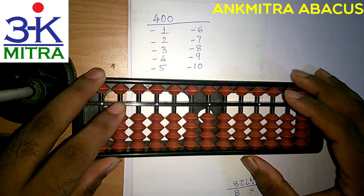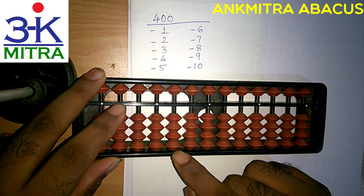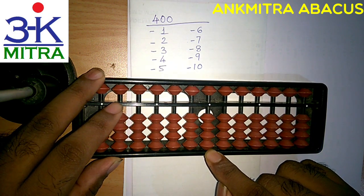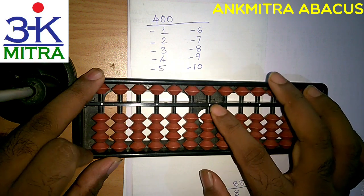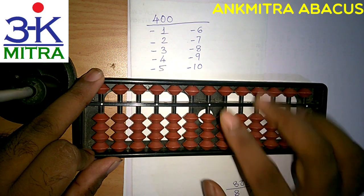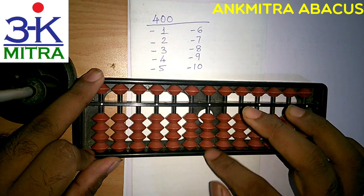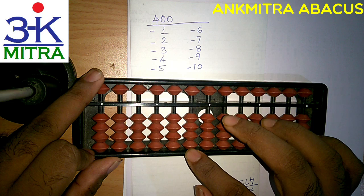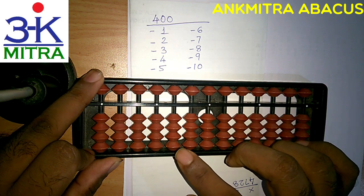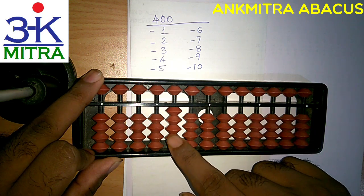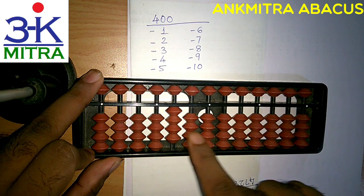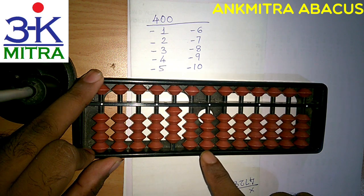So let's start with 400 on the Abacus first. This is our units place — the white dot in the middle is our units place. So this rod being units place, the next one will be the 10s place and the next one will be the 100s place. So I will have to take 4 on the 100s place initially, so the number becomes 400 on the Abacus.